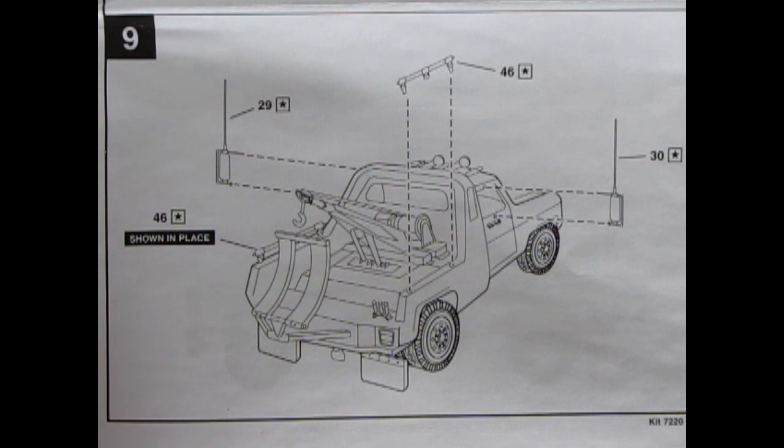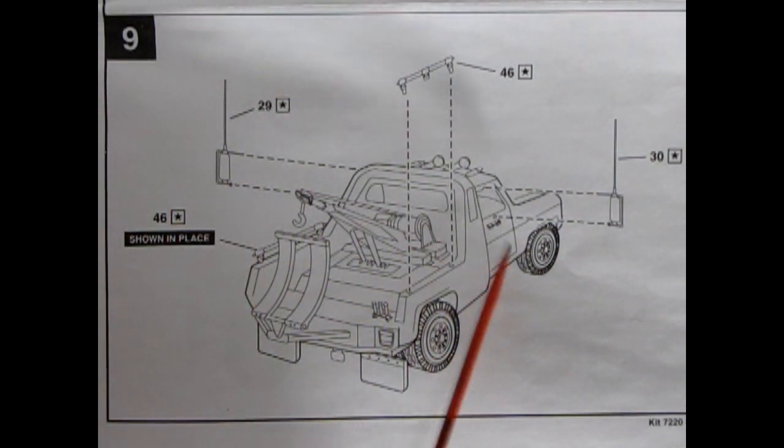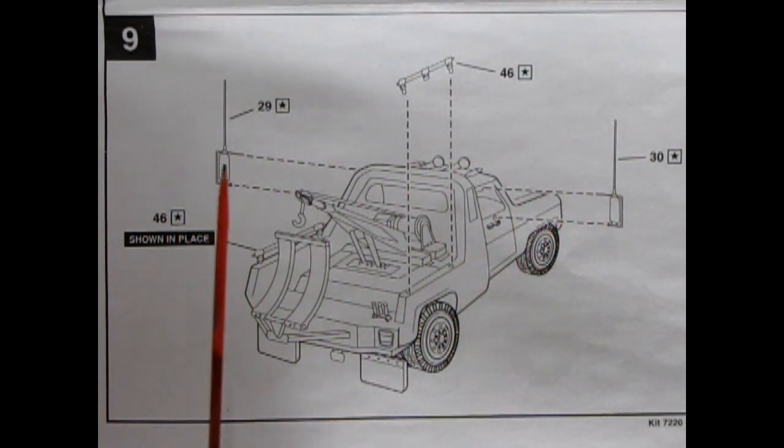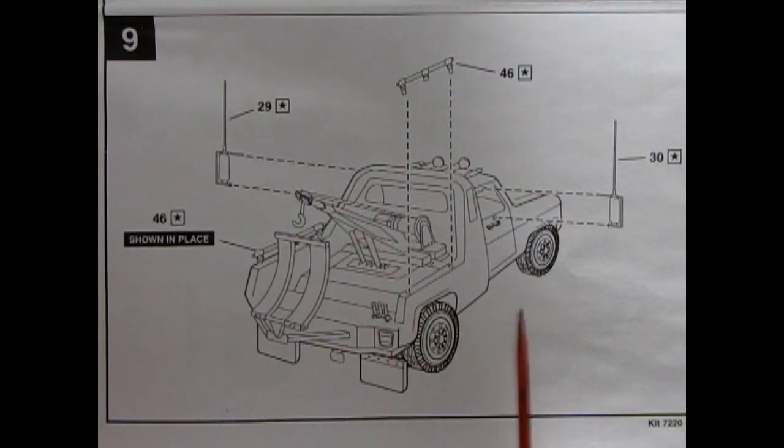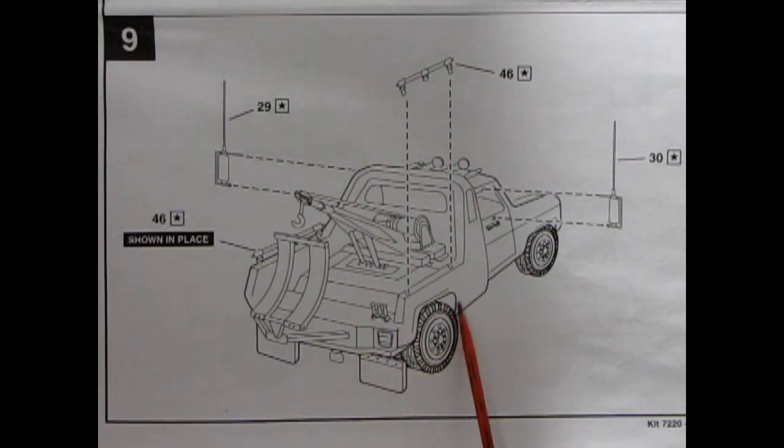Panel 9, our final panel, shows the chrome mirrors being glued onto the side along with the antennas and then we've got our handrails being glued onto the back of the truck bed.